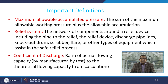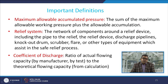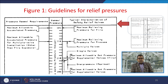The maximum allowable accumulated pressure is the sum of maximum allowable working pressure plus the allowable accumulation. The relief system is the network of components around a relief device, including the pipe to the relief device, the relief device itself, the discharge pipeline, knockout drum, scrubber, flare, or other equipment assisting in safe relief. The coefficient of discharge is the ratio of actual flowing capacity — determined by the manufacturer or by testing — to the theoretical flowing capacity from calculation.